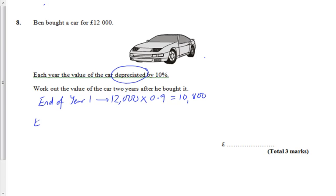And then at the end of the second year, it starts year 2 worth £10,800. So that's its now current value, not £12,000. It's gone down 10% again, but 10% of this means it's £9,720. And so that must be the final answer. Two years after you bought it, it's worth £9,720.